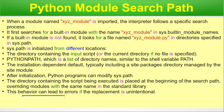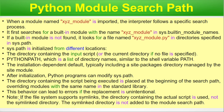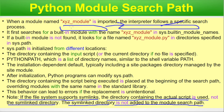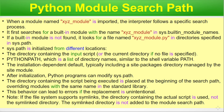This behavior can lead to errors if the replacement is unintentional. Also note: if the file system supports symbolic links, the directory containing the actual script is used — not the symlinked directory. The symlinked directory is not added to the module search path. So the actual path of the symbolic link's target is included, not the directory from which the symbolic link exists.